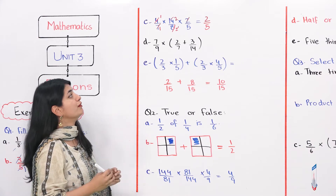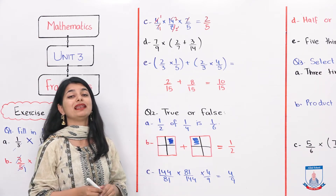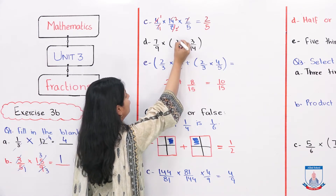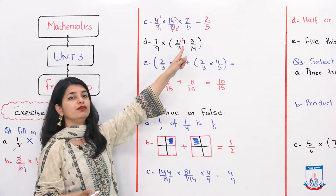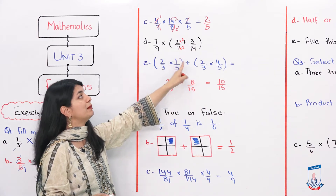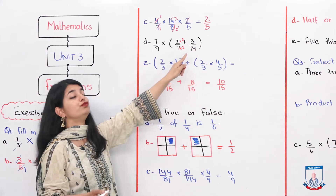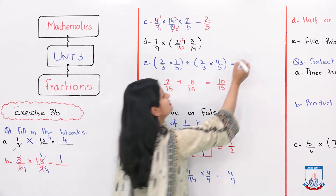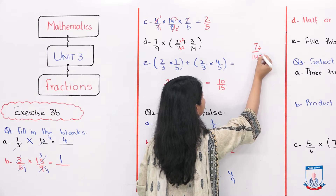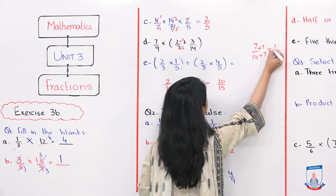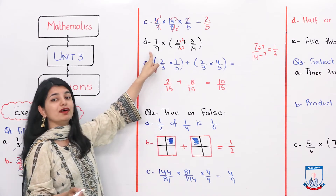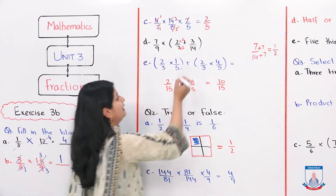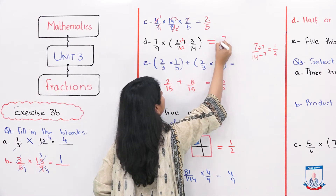Part D is 7 over 9 multiplied by 2 over 7 plus 3 over 14. Since we have to add first, we make the denominator 14. So 2 over 7 becomes 4 over 14, and 4 plus 3 is 7 over 14. Simplifying 7 over 14 by dividing by 7 gives 1 over 2. Then 7 over 9 into 1 over 2 is 7 over 18. The answer is 7 over 18.